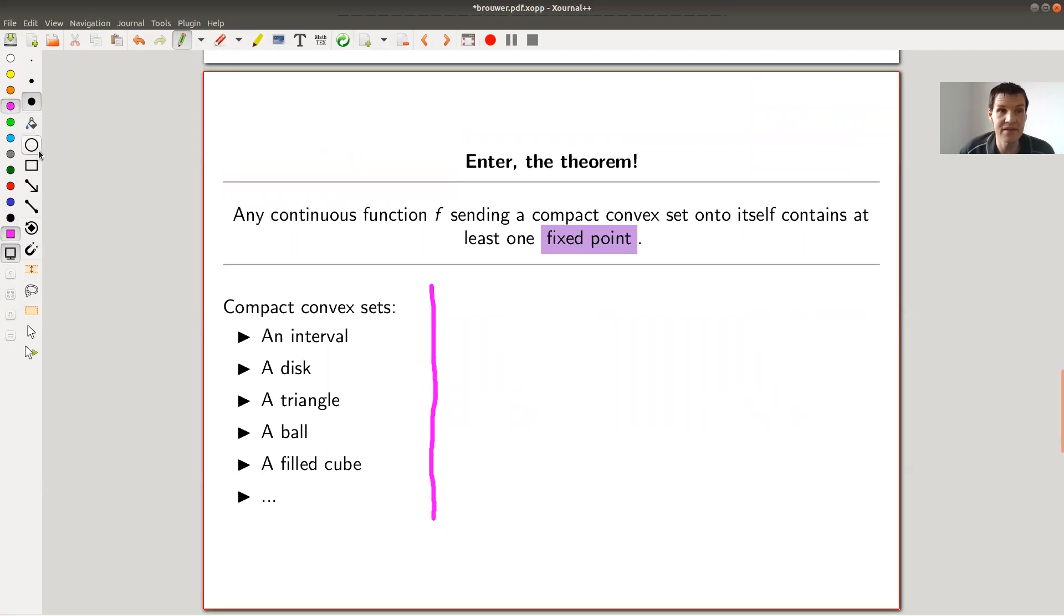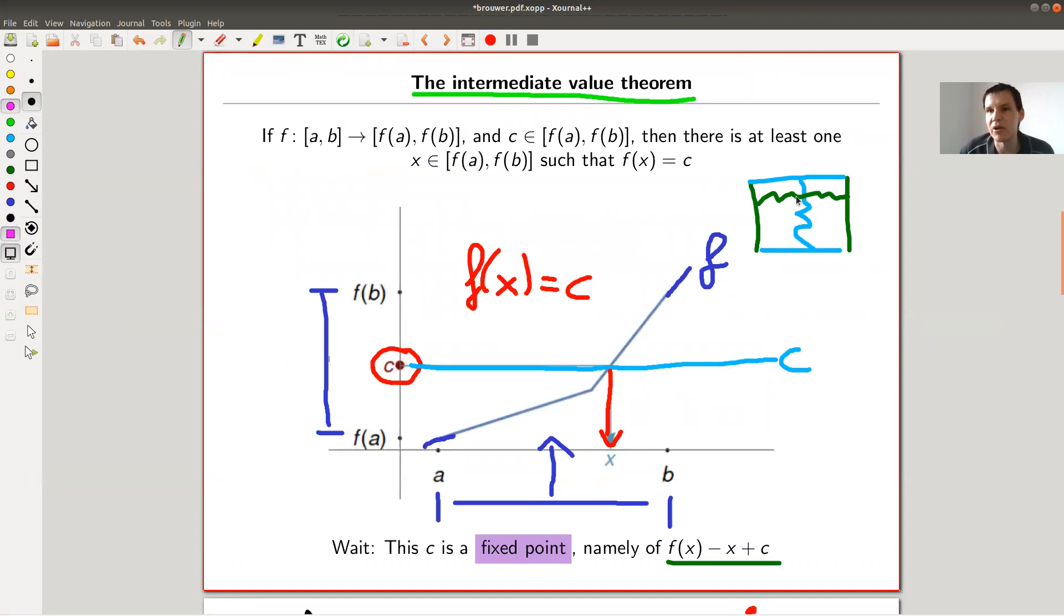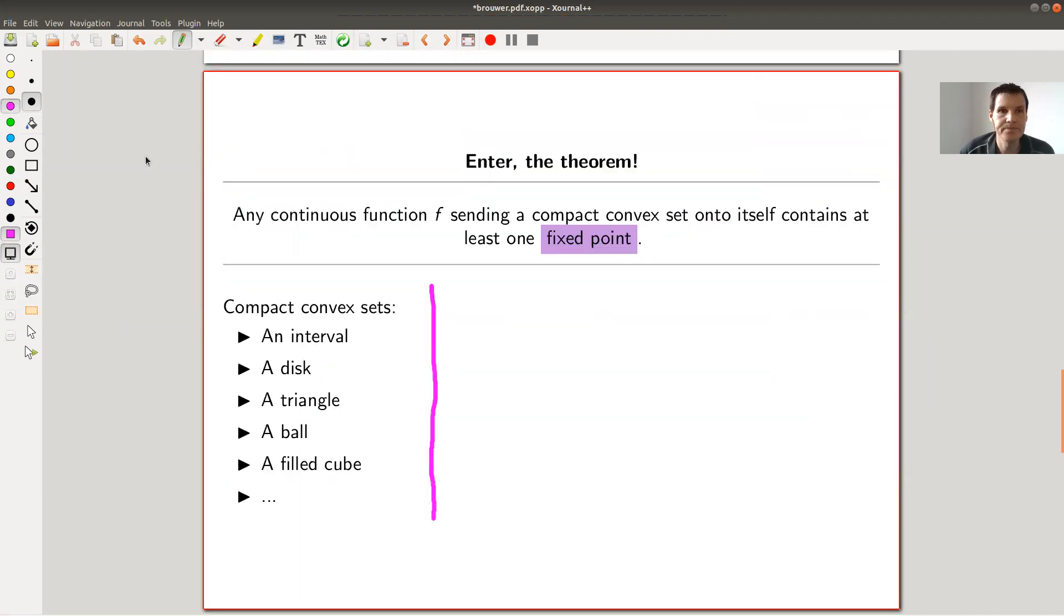And the theorem itself is now extremely beautiful. It says the following. So here are a lot of examples of where the theorem applies to. And the theorem is just take any continuous function, which is something like this, right? You don't want to jump, something continuous. So the only ingredient here is continuous. And you want to have a compact convex set, like an interval, a disc, a triangle, a ball, a filled ball, a filled cube, anything basically. And the statement is it contains a fixed point. So any map from itself contains a fixed point, which just means you will find a point where f(x) equals x.